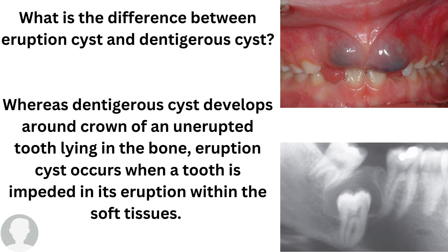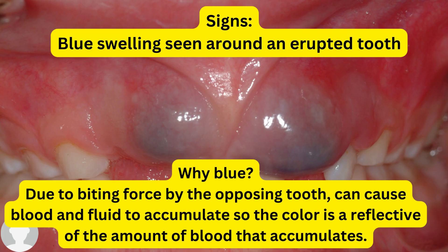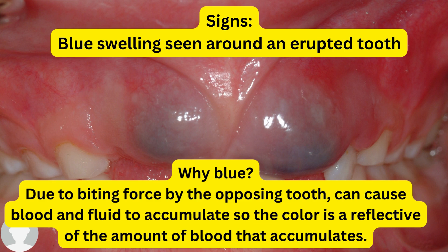The signs of an eruption cyst: as you can see in the picture, you will have a blue swelling seen around the unerupted tooth. The color is blue due to the biting force from the opposing tooth, which causes blood and fluid to accumulate. The color — blue, purple, or dark — is reflective of how much blood is inside the cyst. It is completely asymptomatic, but if parents are concerned about its appearance, we can do a simple incision and drainage to get rid of the cyst and allow the tooth to erupt normally.